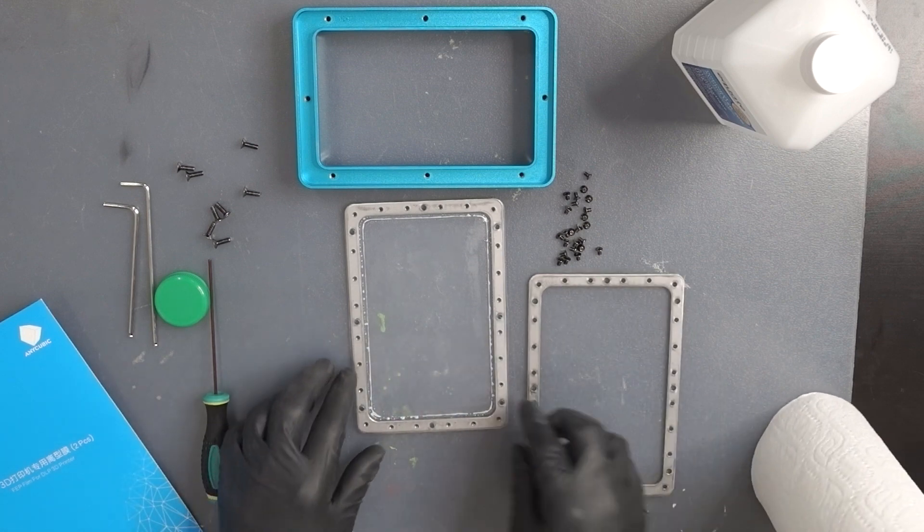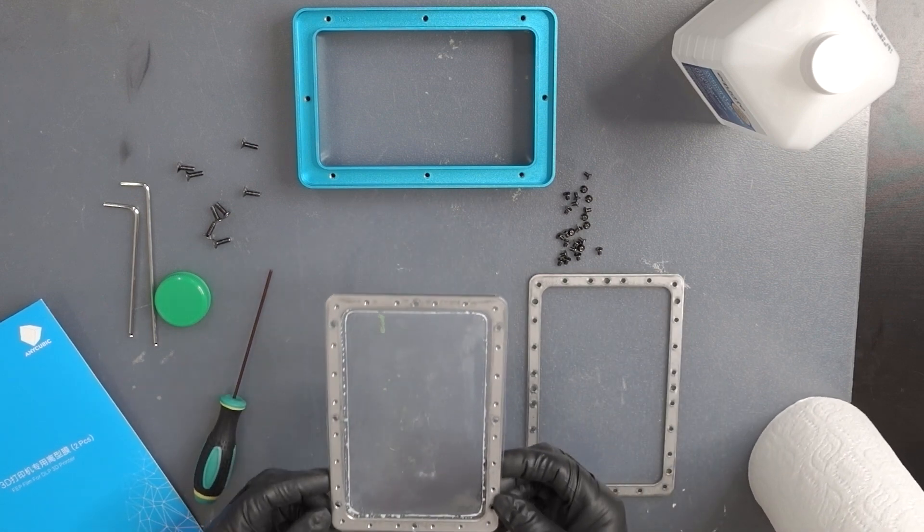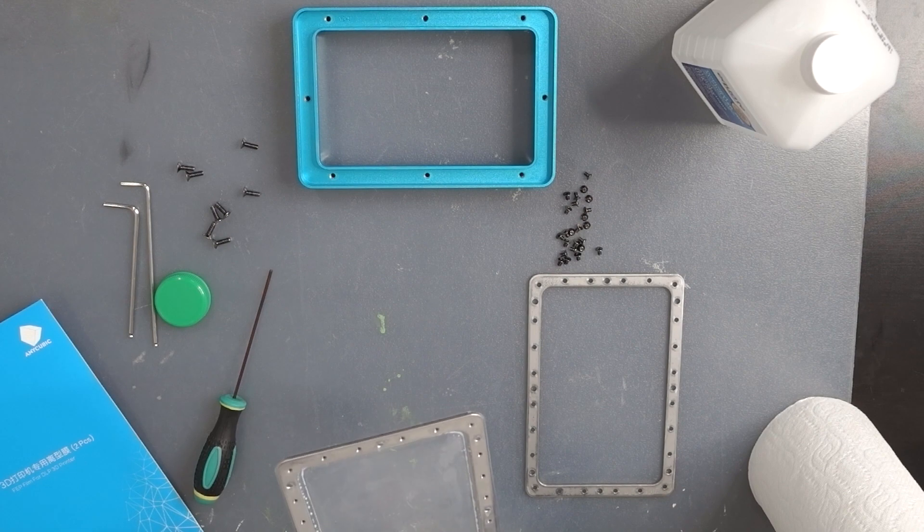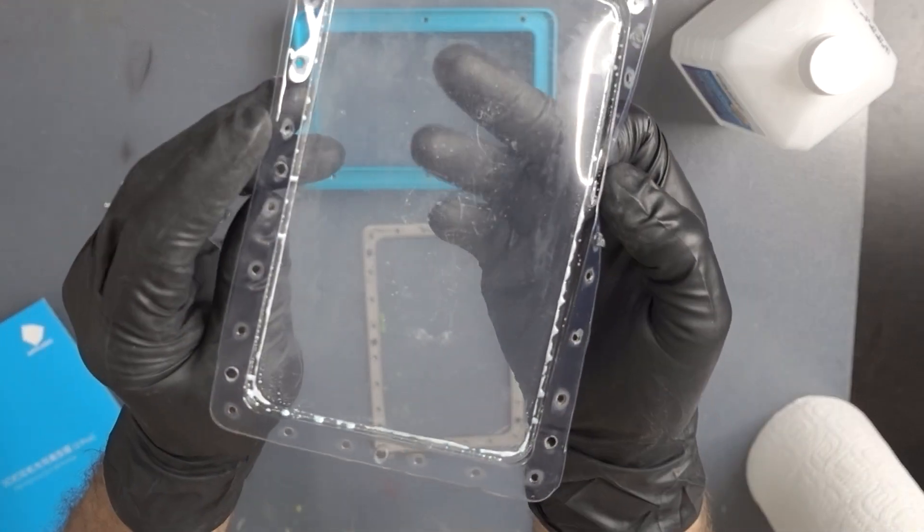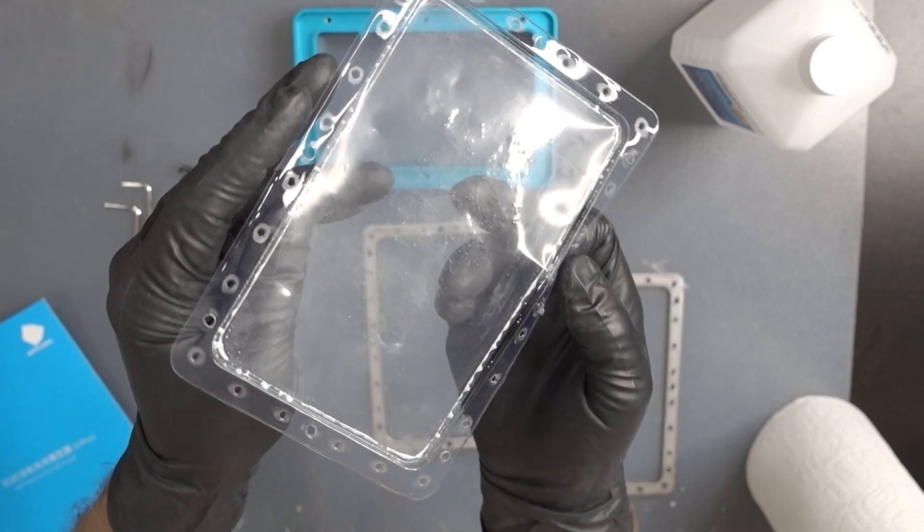Alright, so we've got that removed. As you can see here, we have the FEP film, the old one. You can see all the droplets of resin that I was talking about. A little bit of a scratch and scuffs and all kinds of bumps and grooves.